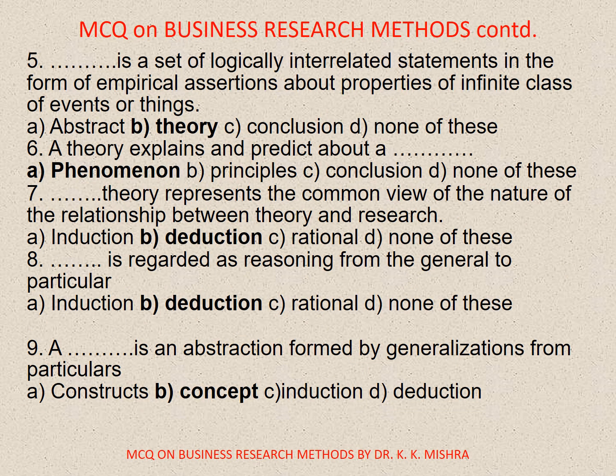Question number five. Dash is a set of logically interrelated statements in the form of empirical assertions about properties of a finite class of events or things. Options are: A. Abstract, B. Theory, C. Conclusion, D. None of these. Correct option is B. Theory.